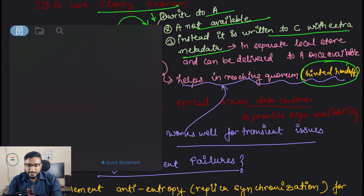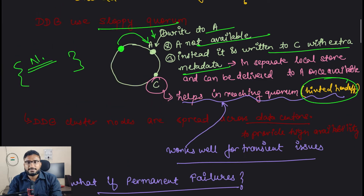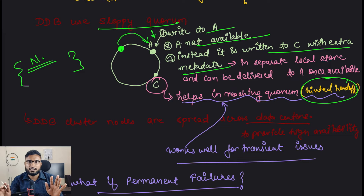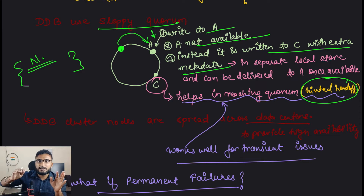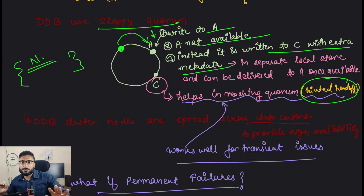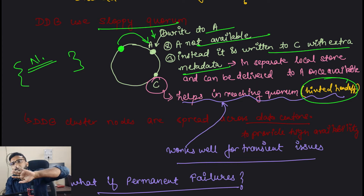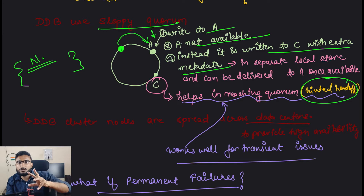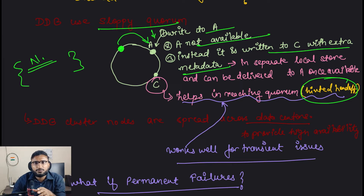This helps in reaching the quorum, which is what hinted handoff means. Basically the system will think that we have reached the quorum - you are giving a hint that quorum has been reached, your data is written, and it will be synced in all the required replica nodes once that particular node comes back.